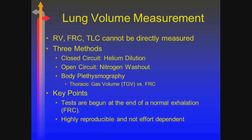We talked previously about how we get these measurements — the three values that cannot be measured with simple spirometry: residual volume, total lung capacity, and functional residual capacity. You need some other mechanism to do it. The three primary ways are the closed-circuit helium dilution, the open-circuit nitrogen washout, and then the body box.